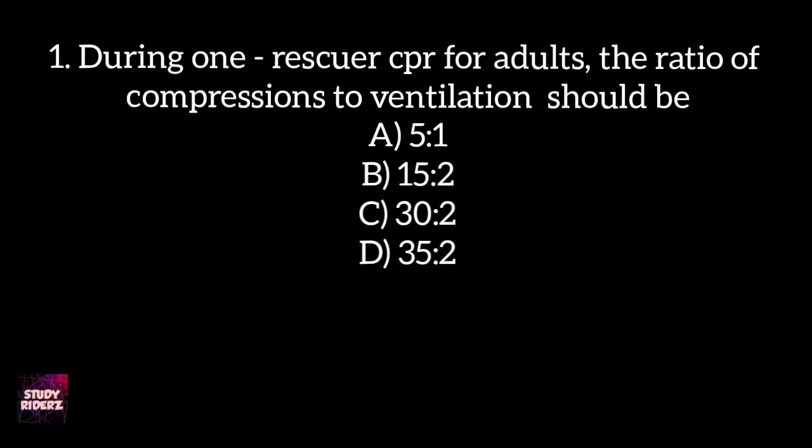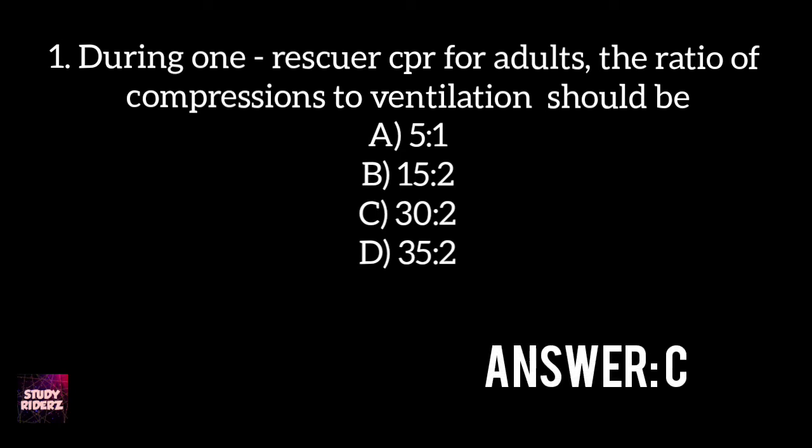For 1-rescuer CPR for adults, the ratio of compression to ventilation should be? The answer is Option C: 30 to 2.